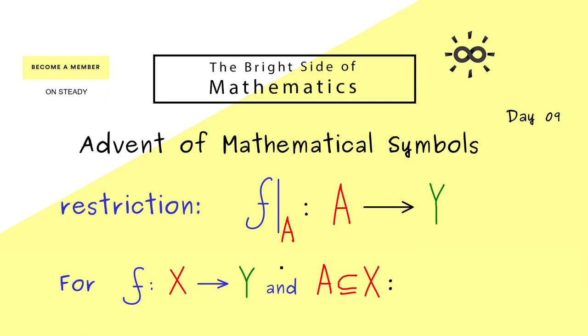And now the only question we have is how can we define this new map we could call the restriction of f to a. Indeed the definition is very simple because it should do the same as f itself. This means if we put in an x we get the same result no matter which function we use.